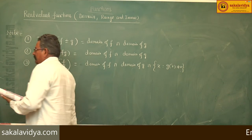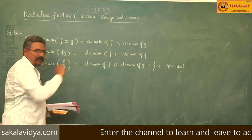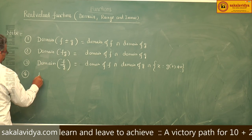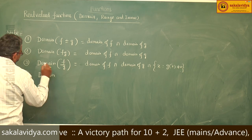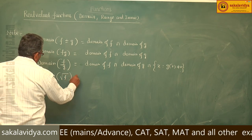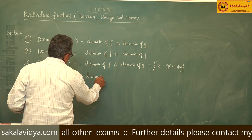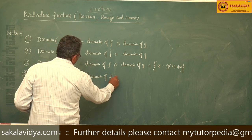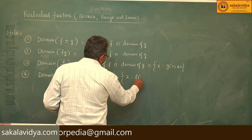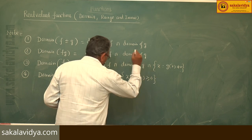If g(x) equals zero, then f/g is not defined, so we must exclude those points. The domain of the square root of f equals the domain of f intersected with the set of x such that f(x) is greater than or equal to zero.